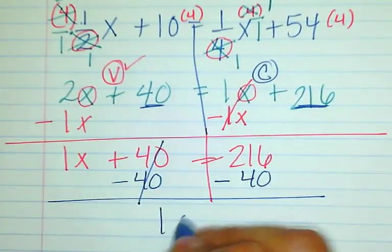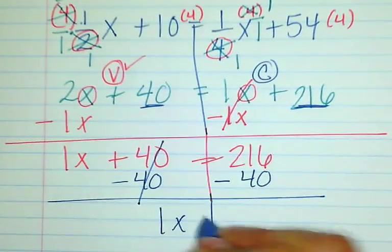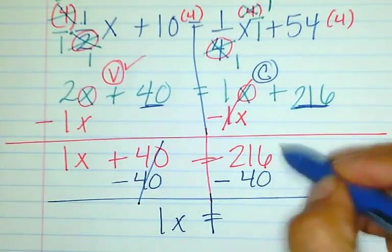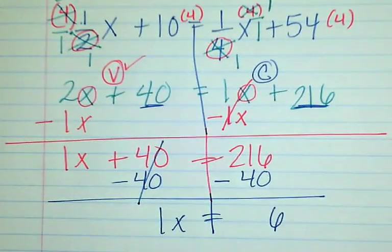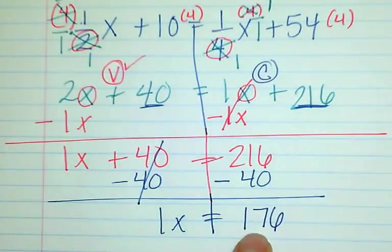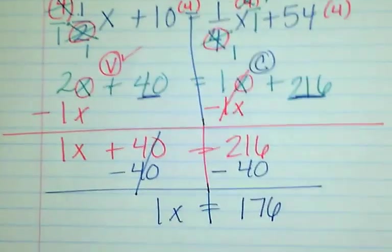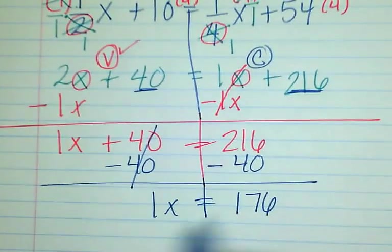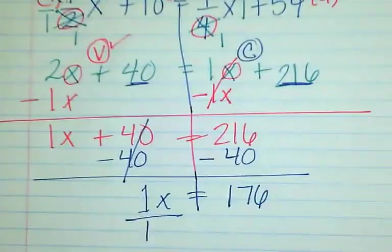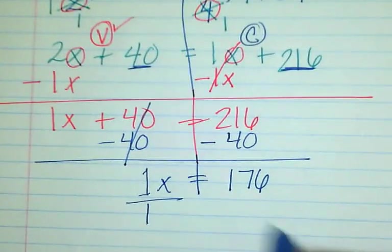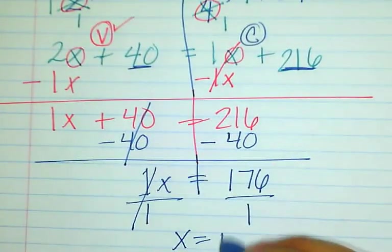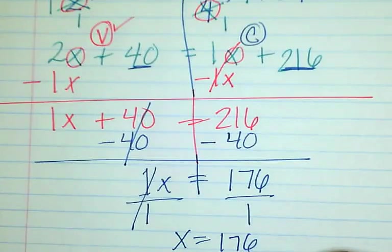I have 1x left on this side. Over here, 216 minus 40 — since 216 is bigger it stays positive — giving me 176. You don't have to show dividing by 1 since the coefficient is already 1, but if you want, divide by 1 to have x by itself. So x equals 176. That was the answer for guided practice number 1.